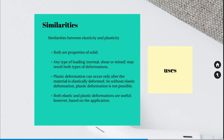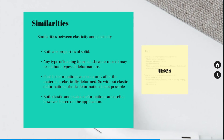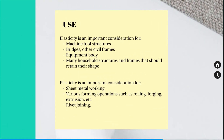These properties — elasticity and plasticity — are considered while selecting a material for design, and each has multiple uses based on the application. Elasticity is important when considering materials for machine tool structures, bridges, civil frames, equipment bodies, and household structures, because we want materials that can absorb a lot of energy without any changes during normal usage. Similarly, plasticity is important for sheet metal working and various forming operations such as rolling, forging, extrusion, rivet joining, and many other similar applications.